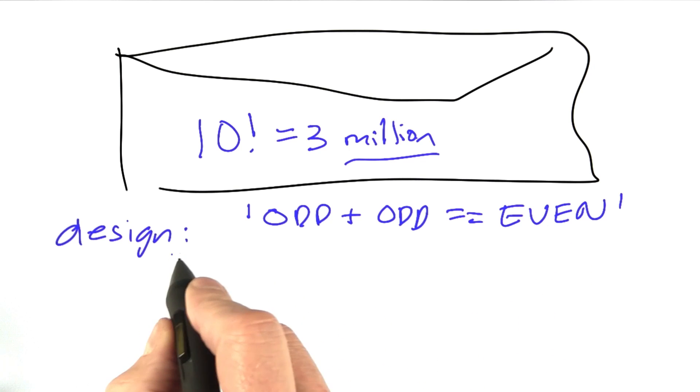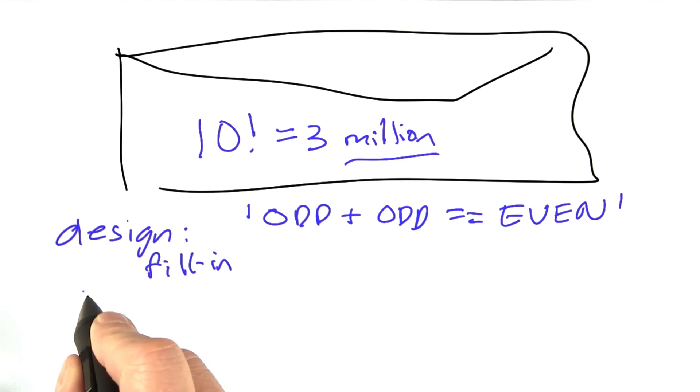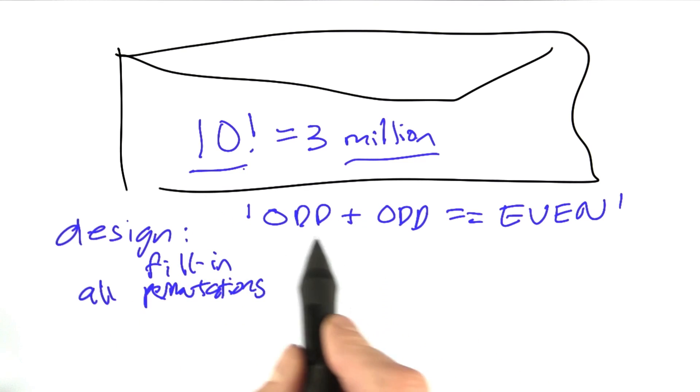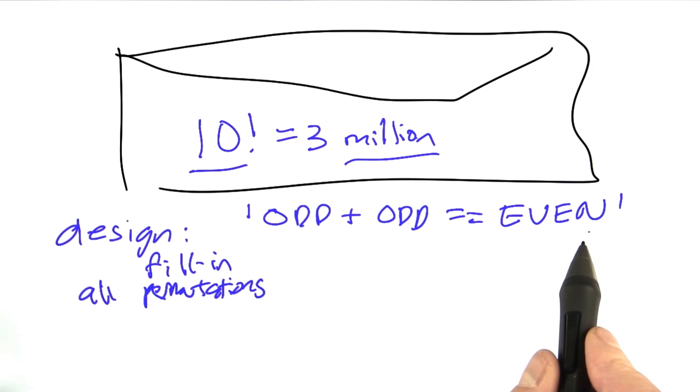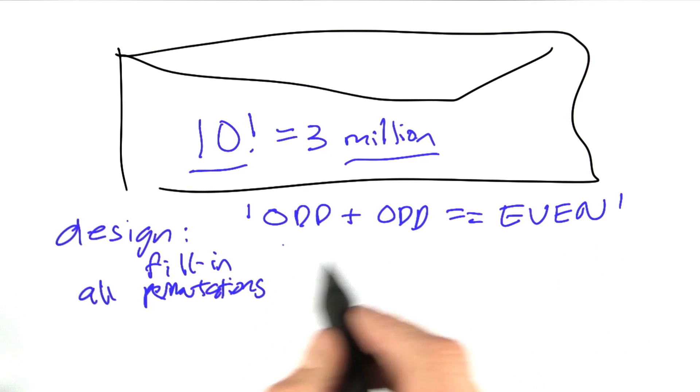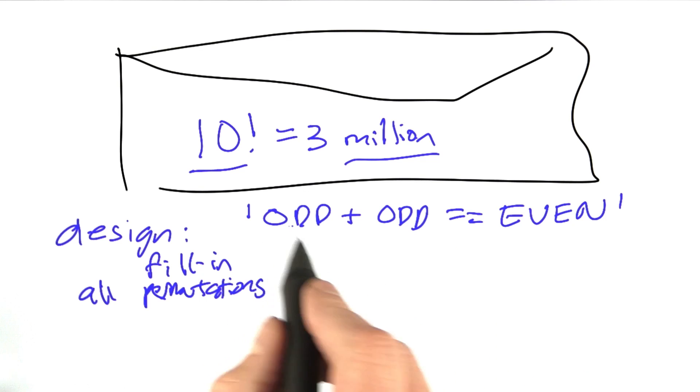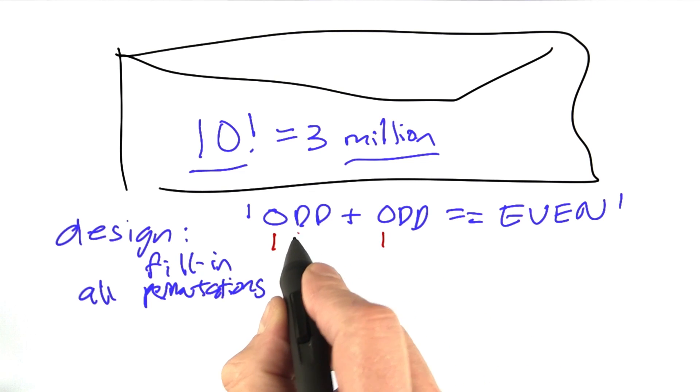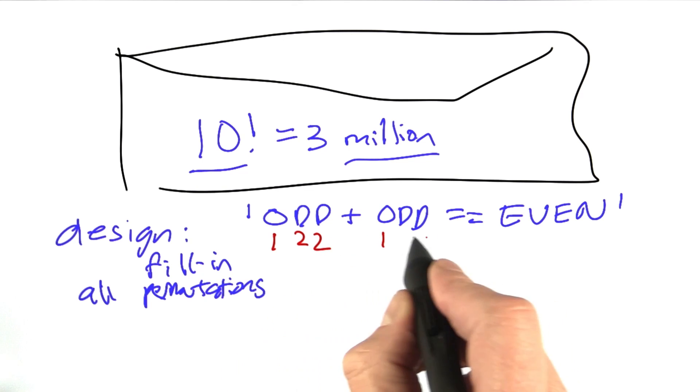And then we fill in with all permutations of the ten digits for each of the letters. And if there's fewer letters, we have to account for that. And so, for example, we might substitute a 1 for the O's, and a 2 for the D's.